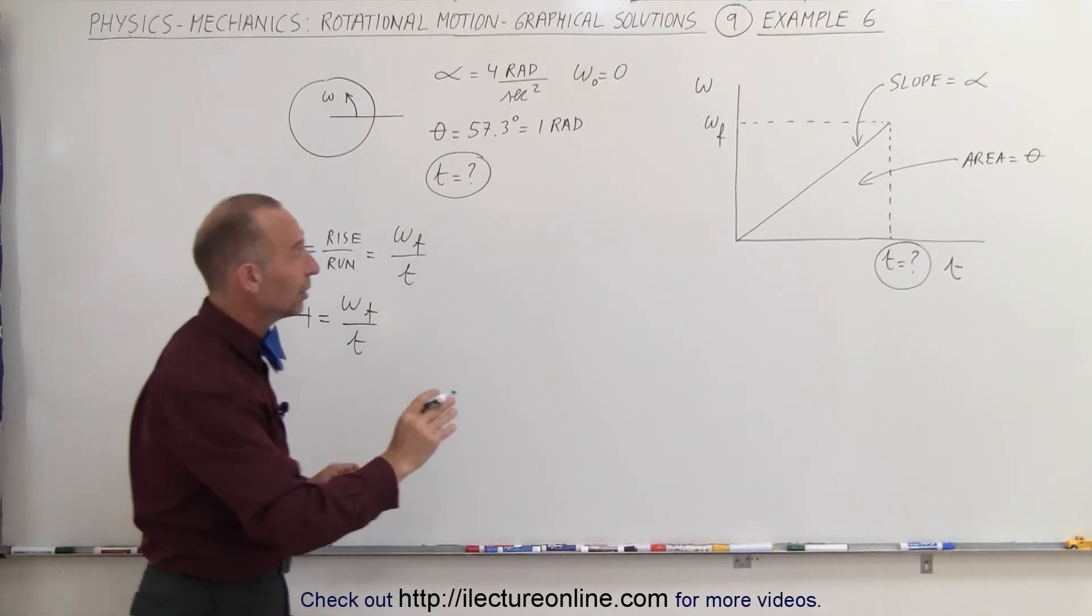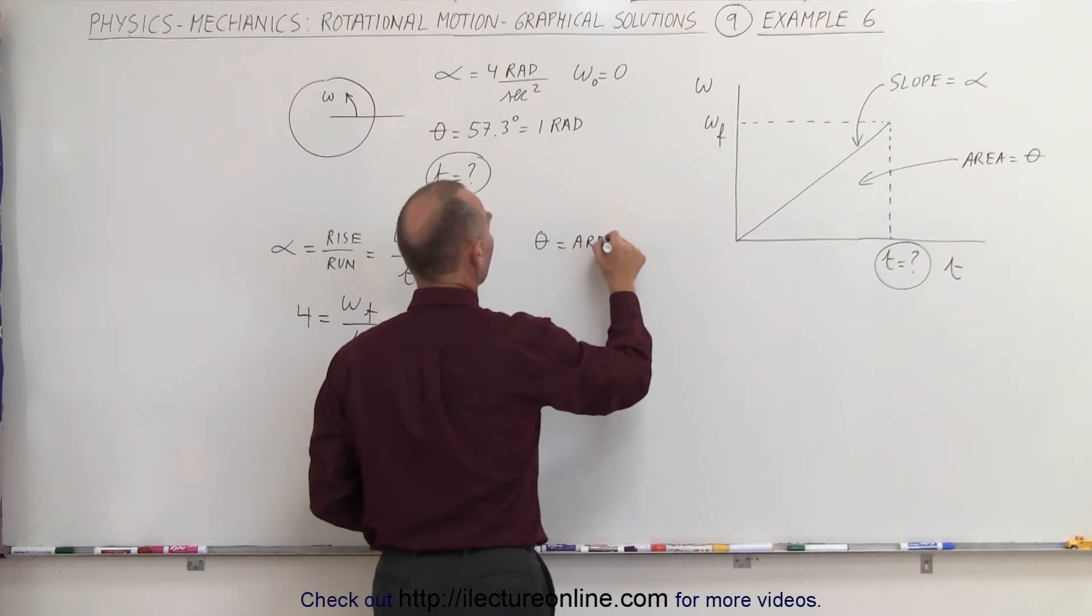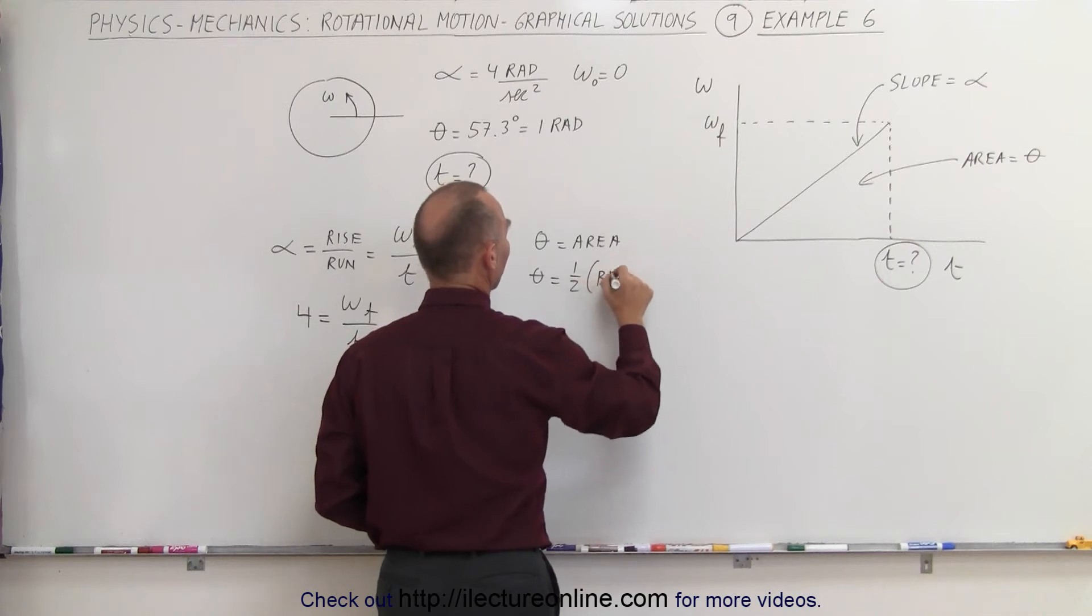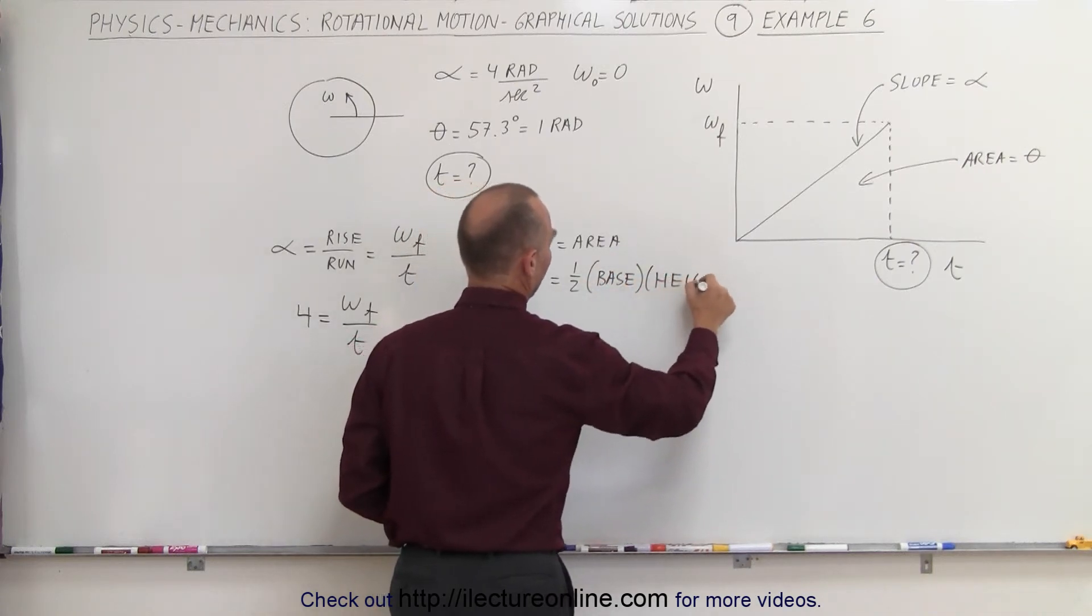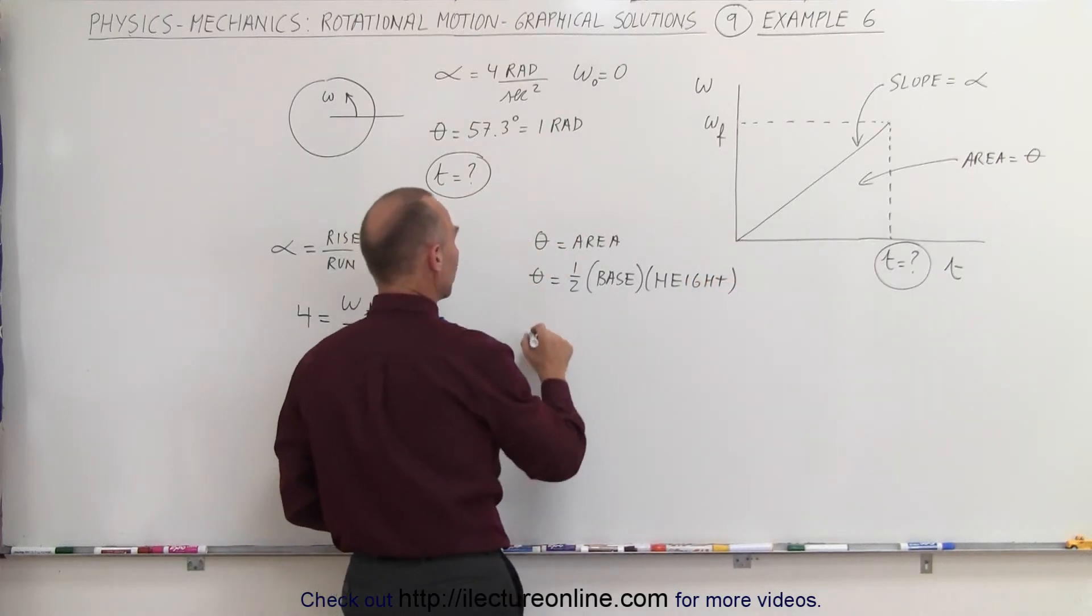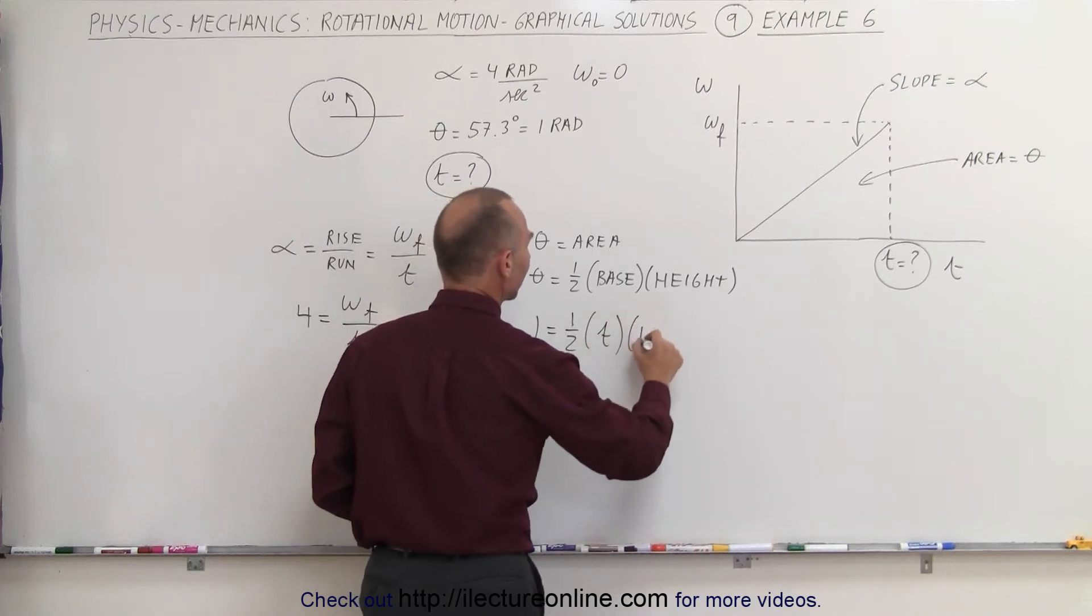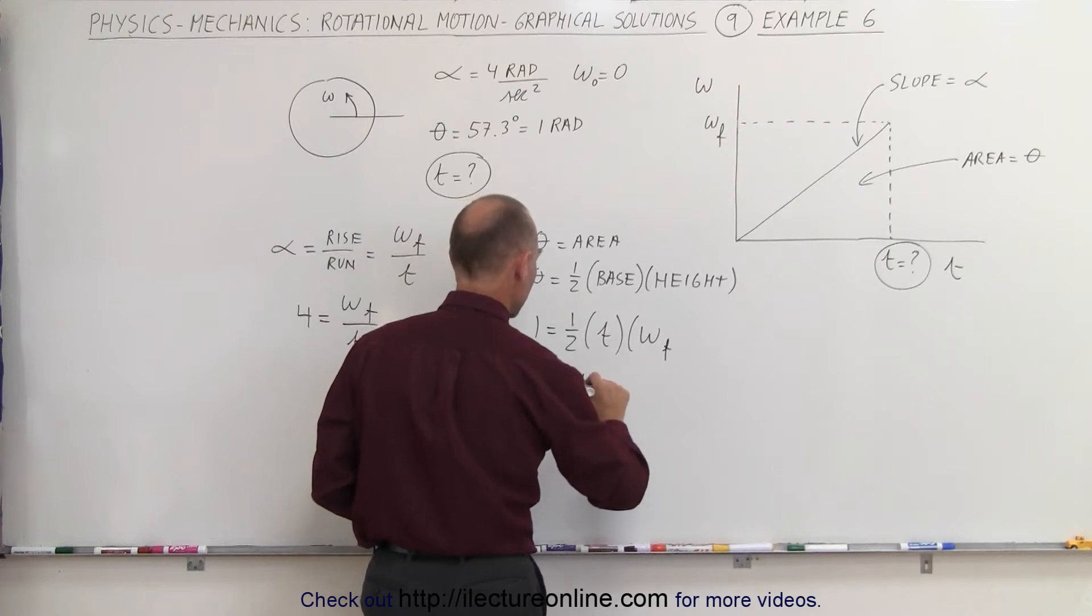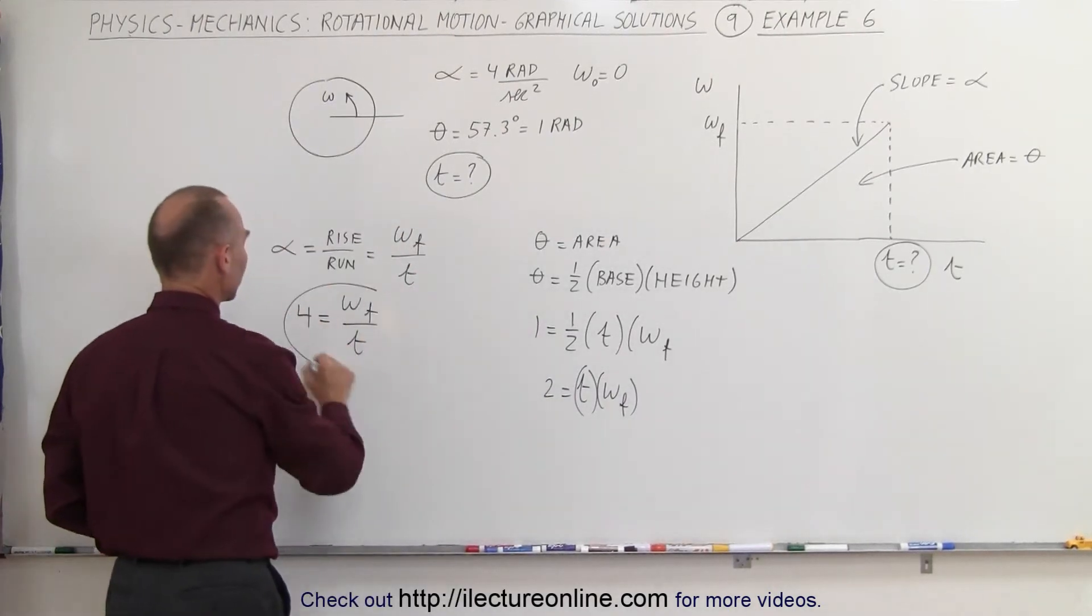Then use the second equation for the area. We know that theta equals the area, and we know that the area theta is equal to one half the base times the height. Theta is known, it's one equals one half, the base is the time, and the height is omega final. And when we put it over there, we can say that two equals t times omega final. So now we have two equations and two unknowns.